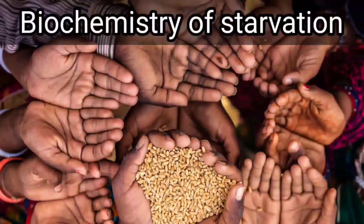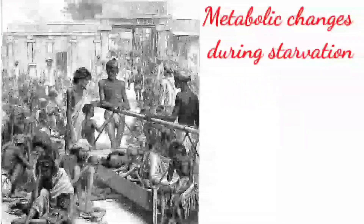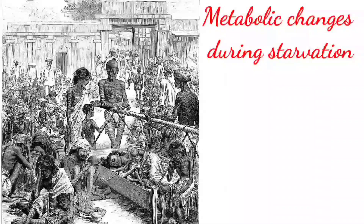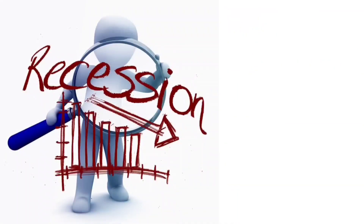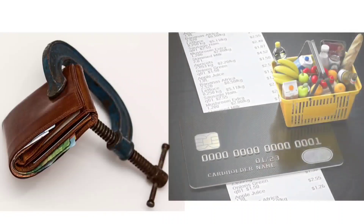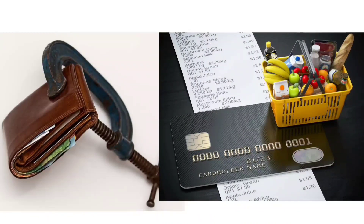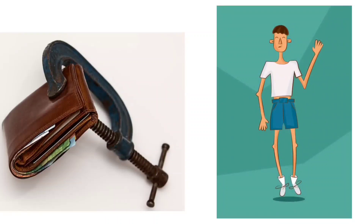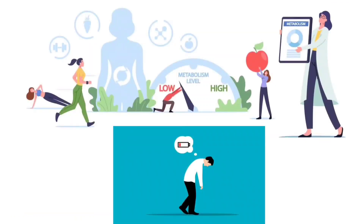To understand the concept of biochemistry of starvation — how our body adapts to the starvation condition and what biochemical processes are used to adjust and adapt — we can use the example of a recession. When there is a recession, we tend to prioritize our expenses, using available funds only for necessary things, not luxury. Similarly, when our body is in a starvation condition, it prioritizes available energy sources and molecules, diverting them only to important tissues.